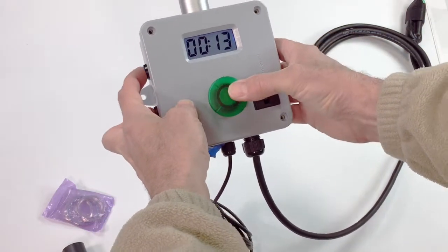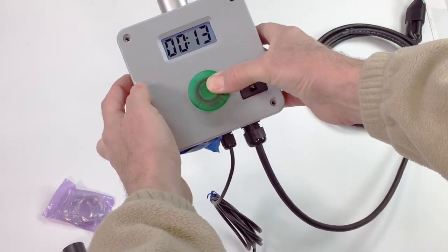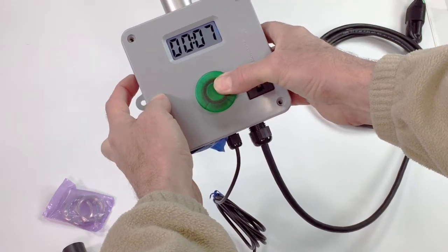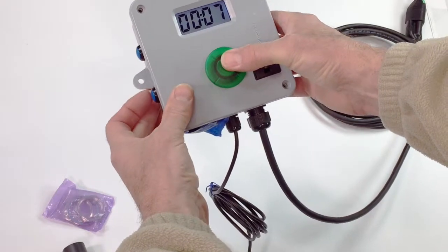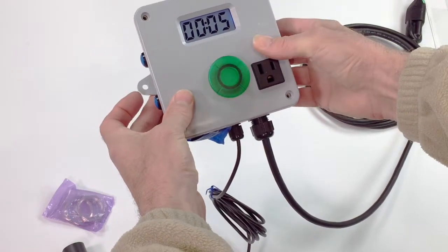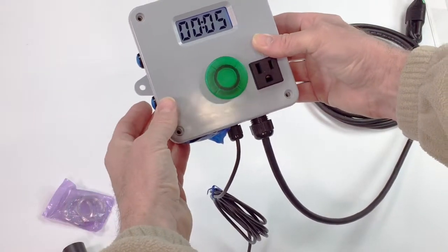Then you'll see it flash, which tells you you're entering the programming mode. So we'll change it from seven seconds down to five seconds. Leave the buttons alone again and it'll flash to let you know that it's registered the time, and now it's all set.